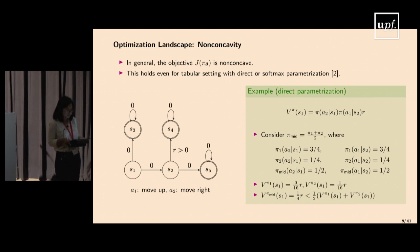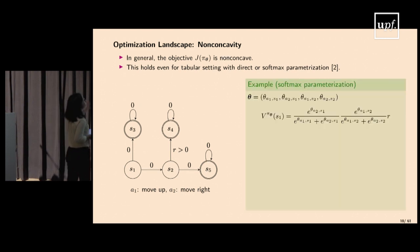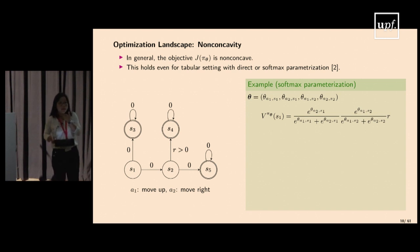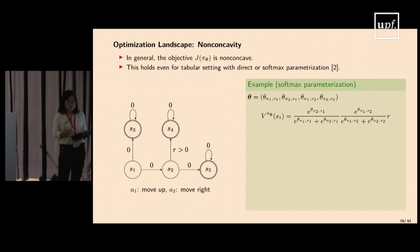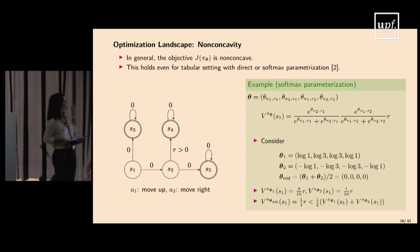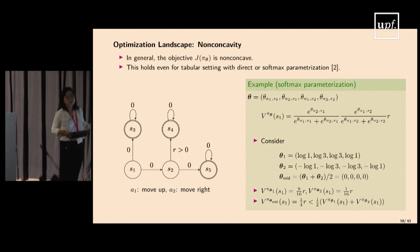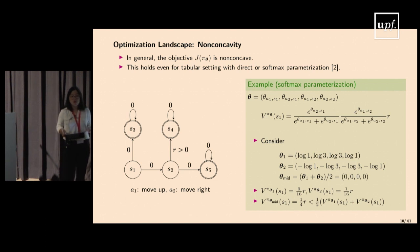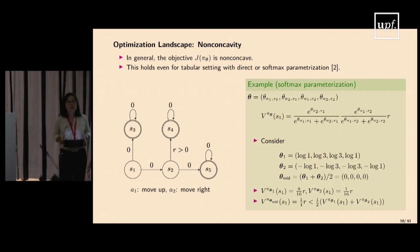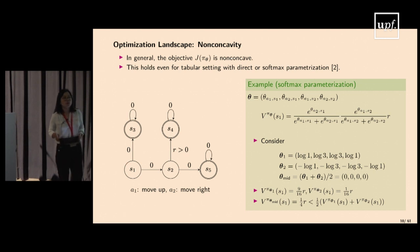Similarly for softmax parameterization with four parameters θ1–θ4 for each state-action pair, the value function again fails the concavity property. So in general, we're dealing with a non-concave objective even under ideal parameterization settings, without even involving neural networks. Once you parameterize policies with neural networks, the problem objective becomes heavily non-convex.